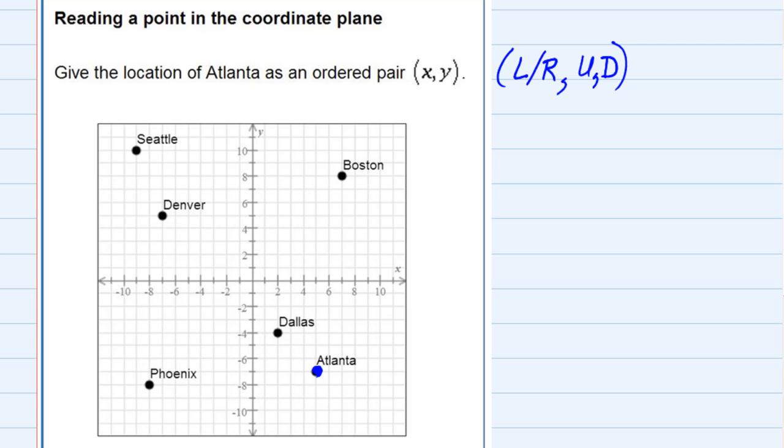Starting at the origin, which is here at the center, to get to Atlanta we first want to express the left-right movement. Atlanta is on the right-hand side, and to get over there we would need to